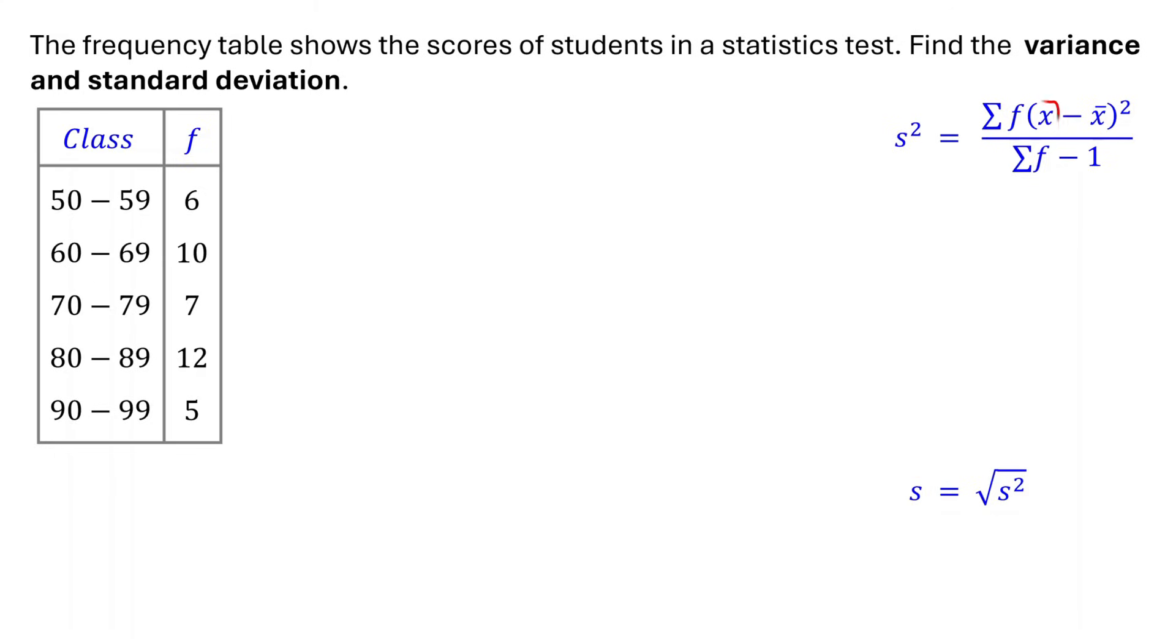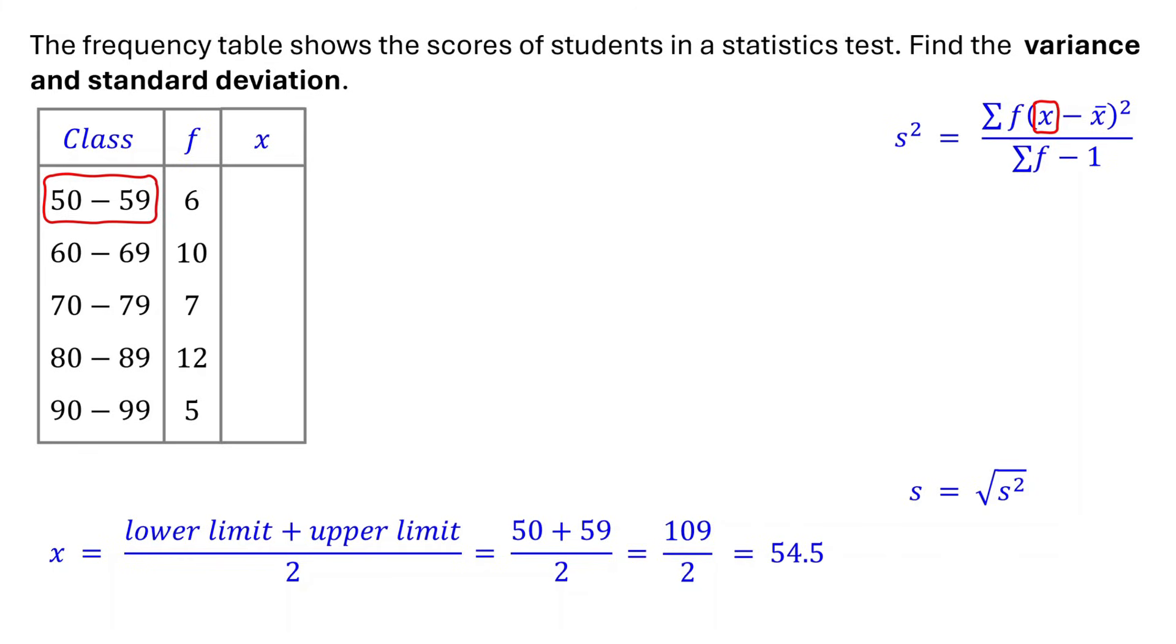The first step is to calculate the midpoint of each class interval. The midpoint of a class is the average of its lower and upper limits. In the first class, the lower limit is 50 and the upper limit is 59. Adding them gives us 109, and dividing by 2, we get 54.5. That's the midpoint of the first class. Similarly, the midpoint of the second class is going to be 60 plus 69 divided by 2, which equals 64.5. Repeat this process for the remaining classes.